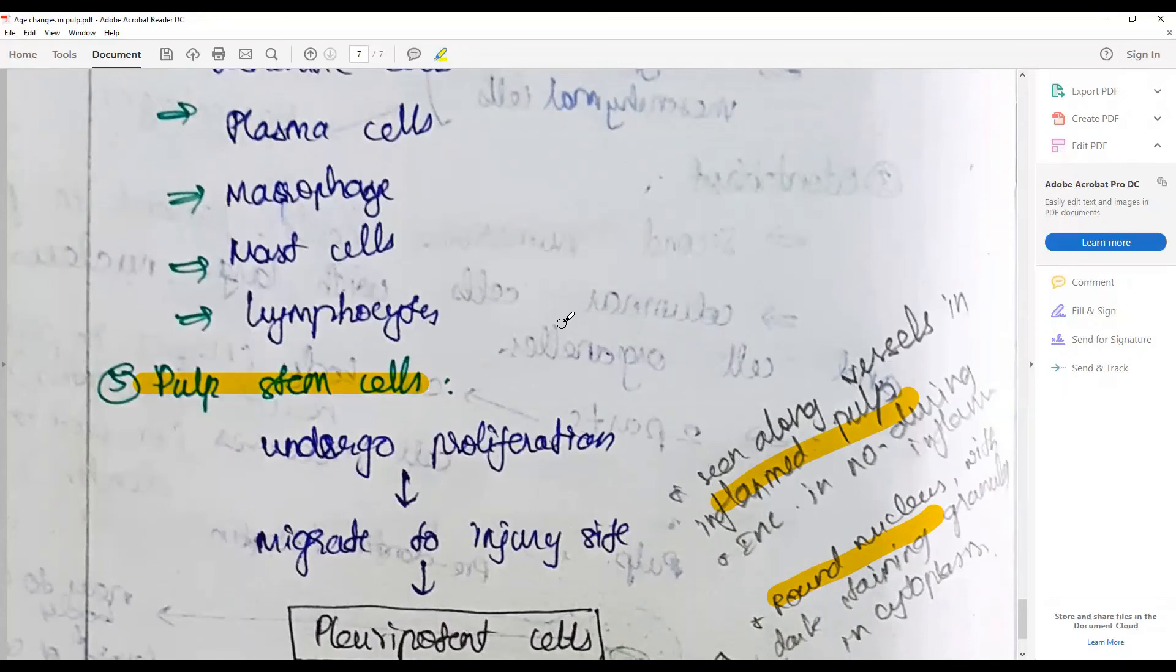Number three, pulp stem cell banking has evolved from third molar teeth. Number four, in pulpitis these defense cells are enlarged. So with that we come to the end of discussion on the cells of the pulp.